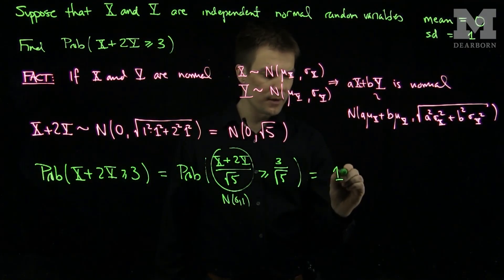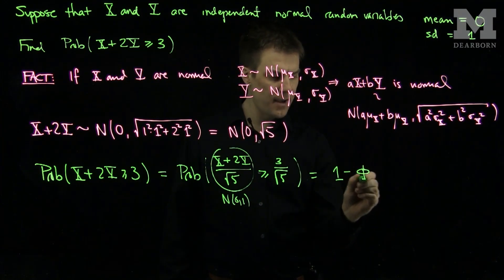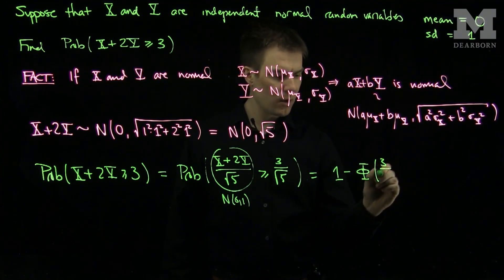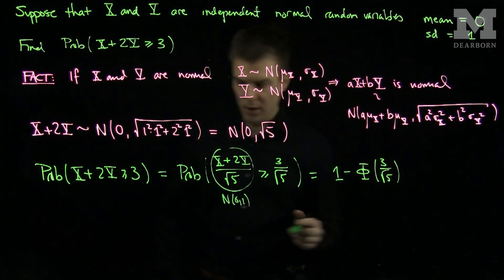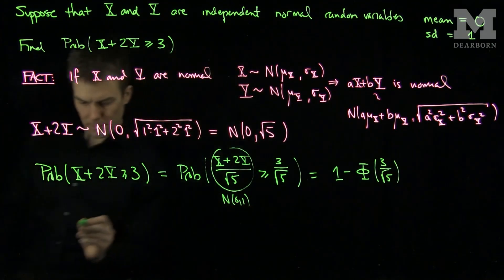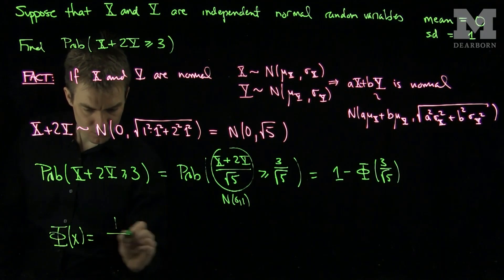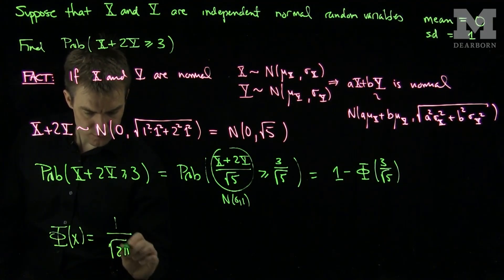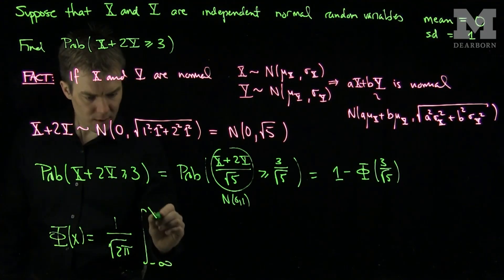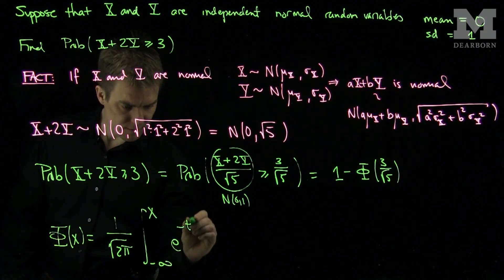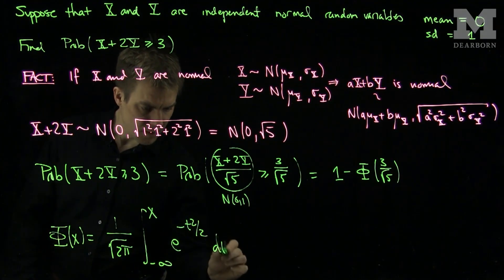And so we can write this as 1 minus Φ(3/√5), where Φ(x) is the CDF of a random normal variable, 1 over the square root of 2π, the integral from negative infinity up to x of e^(-t²/2) dt.